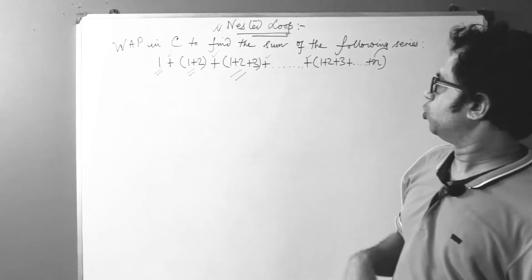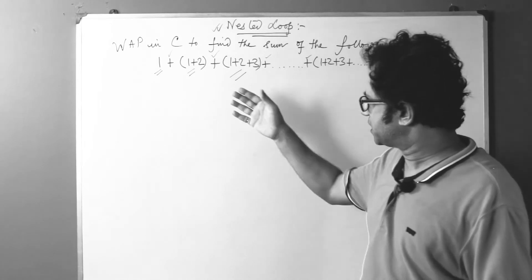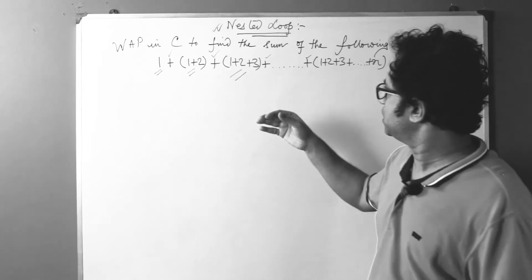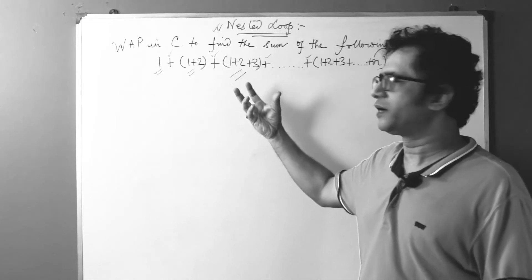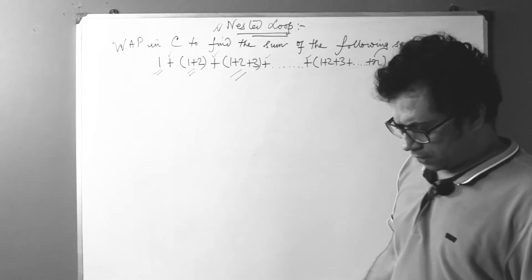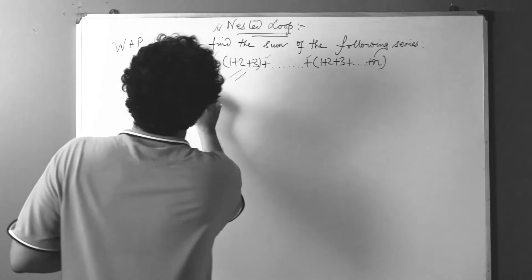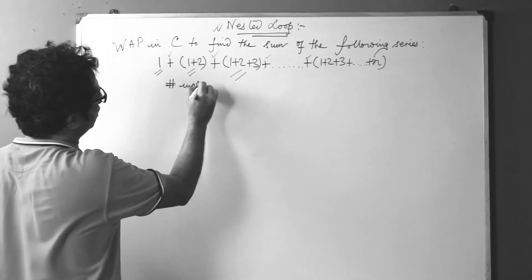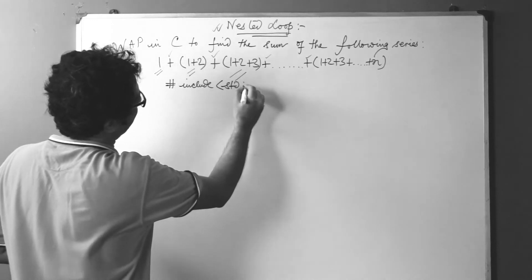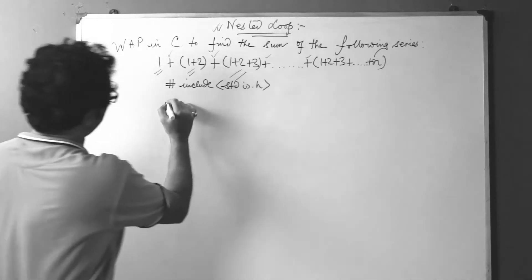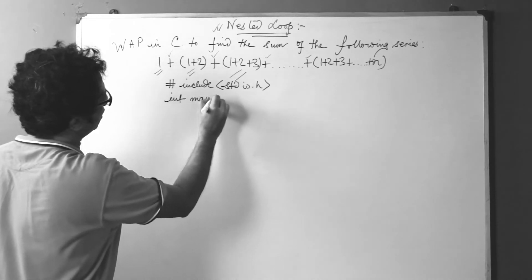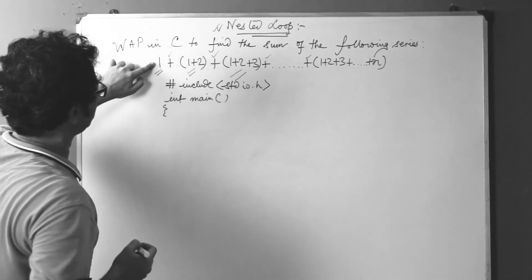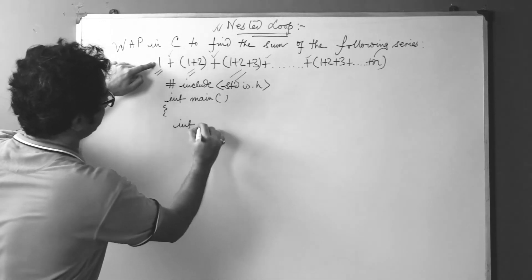Let us get started with writing the program so you can understand what the concept of nested loop is and how it is implemented. So: hash include stdio.h, int main. Now let's see how many variables are needed.